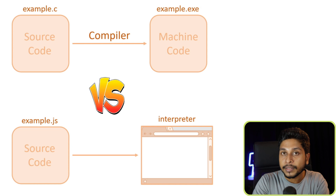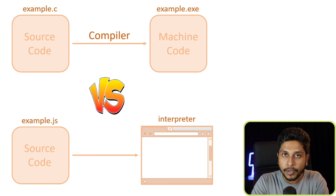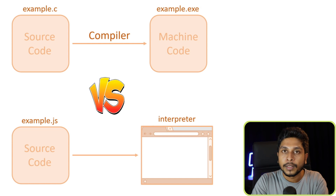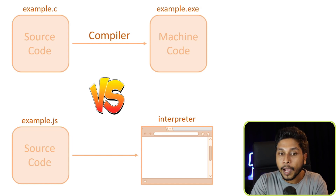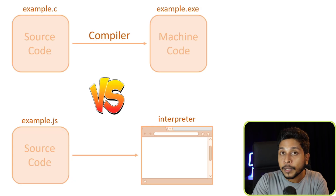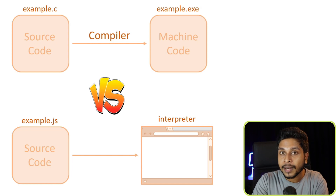One piece of code is compiled by the compiler language. We can use a compiled language to create an executable file in binary format. If we use a program for the interpreter language, you can run, execute, and share the source code directly.